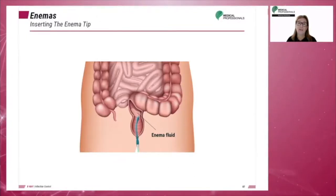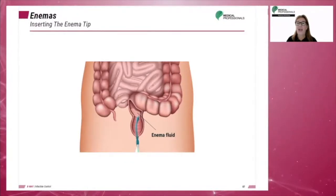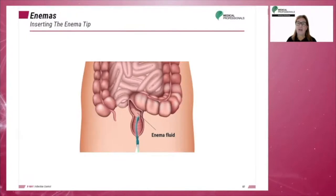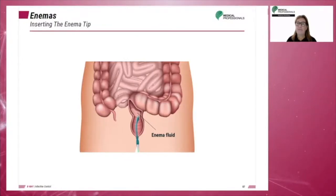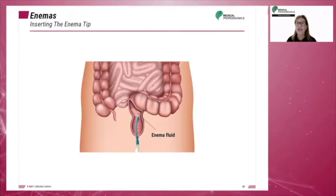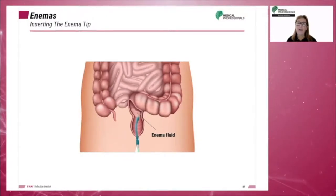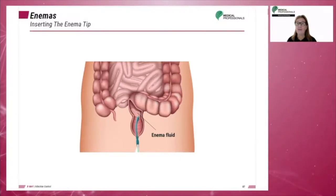The patient is placed in the Sims or lateral position. Always lubricate the enema tip. Ask the patient to exhale slowly and gently insert the tip into the rectum and towards the umbilicus. The tip should not be inserted more than 3 to 4 inches. Never force the tip in. After insertion, the tip is attached to tubing and to the enema solution. Before attaching the tubing, all air in the tubing should be displaced by opening the clamp and allowing the barium to run through the tubing.